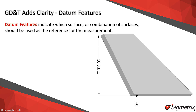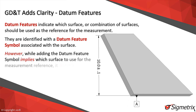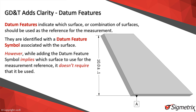First, GD&T provides a method for identifying which surface or surfaces should be used as the reference for measurements. These references, called datum features, are identified with a specific symbol and letter. However, simply adding the symbol has actually not changed anything with regard to the existing callout. Though its presence would imply that the bottom surface is to be used as the reference for the measurement, there is nothing requiring it to be, so both inspections previously performed are still valid.